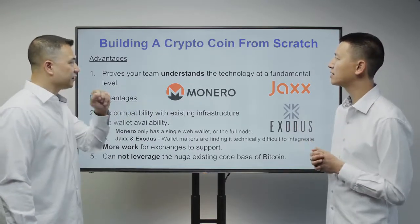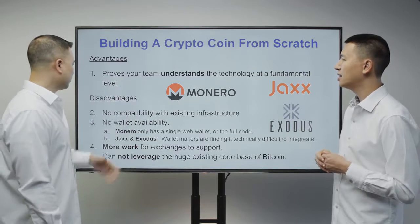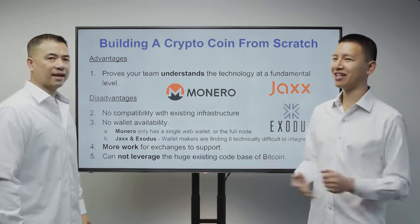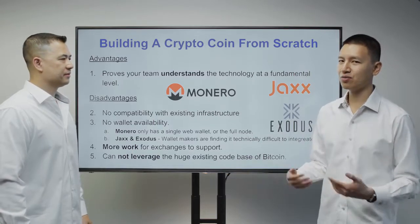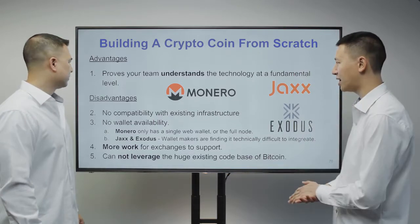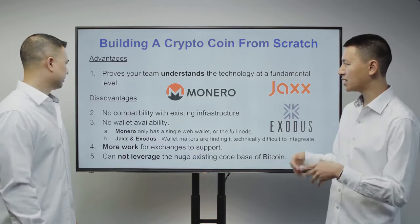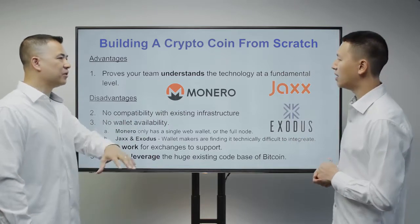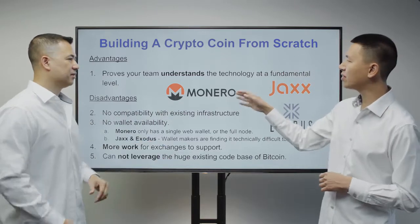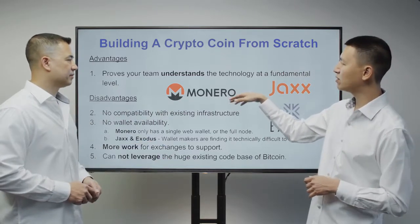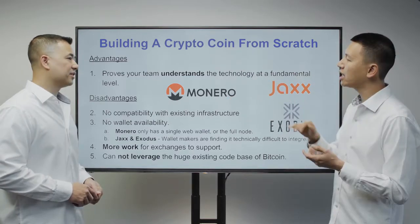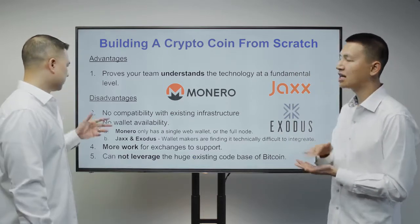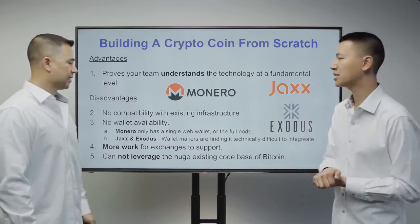Building a cryptocurrency from scratch means your team obviously understands it because you built it yourself — it proves you understand it at the level you've achieved. Monero is an example of a privacy coin based on the CryptoNote technology. It is a brand new code base, not from Bitcoin's code base at all.